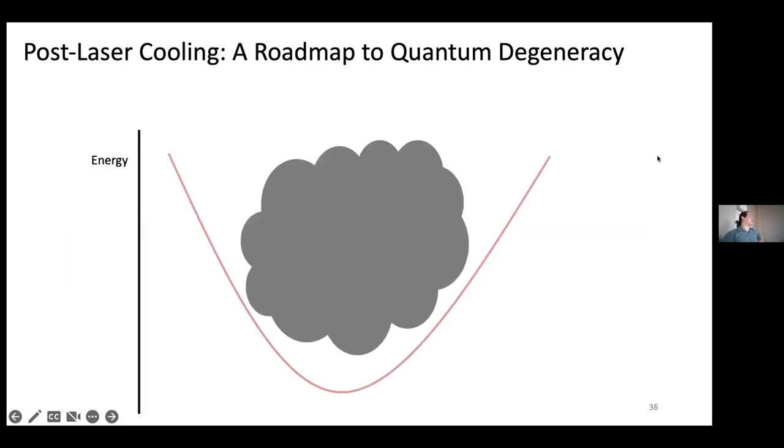So once you have an ODT, you'll do evaporative cooling, which is basically exactly what it sounds like. You leave a hot cup of coffee on the table. The hottest particles evaporate, the remaining particles thermalize and you have an overall colder cup of coffee and you're set. So here you have some trap of some energy depth that's holding your atoms and you can tune the intensity of your light to lower the depth of your trap. The hottest atoms escape and if the remaining atoms re thermalize correctly, then you're left with an overall colder sample, except for in this case you're happy.